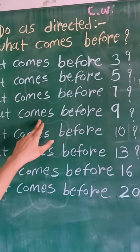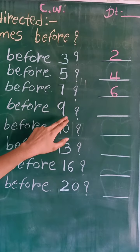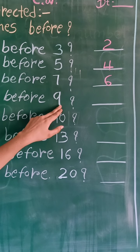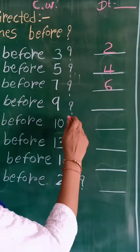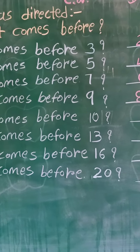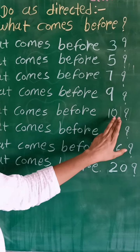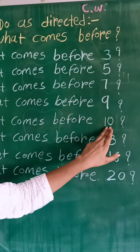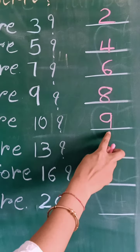What comes before 9? We speak 1, 2, 3, 4, 5, 6, 7, 8, 9. Which number we speak before 9? Number 8. 8, 9. What comes before 10? We speak 1, 2, 3, 4, 5, 6, 7, 8, 9, 10. We speak number 9 before number 10. 9, 10.